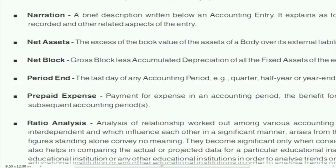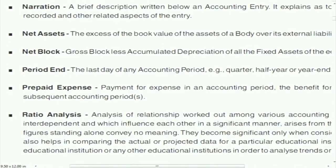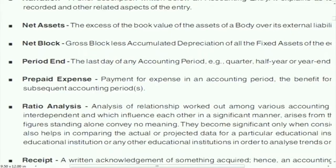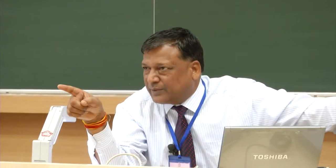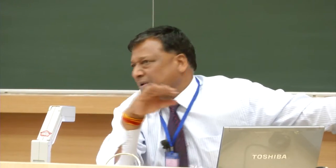Period end: the last day of any accounting period — quarterly or half-yearly — is the period end. Prepaid expenses: expenditure paid this year but whose benefit will accrue next year. For example, an insurance policy taken from January 1st to December 31st — nine months may be prepaid. Unearned or unpaid items are also covered, and regular accounting treatment and policy should be followed.